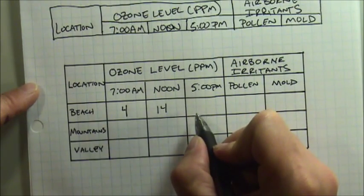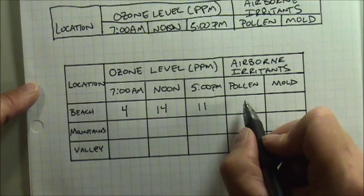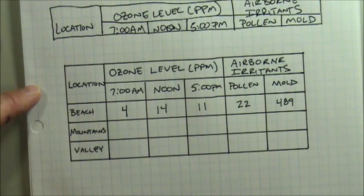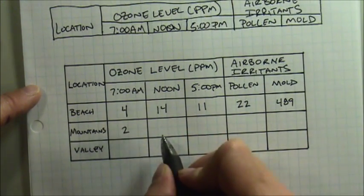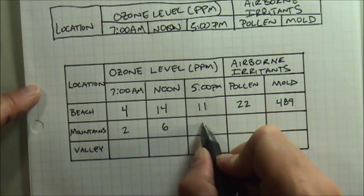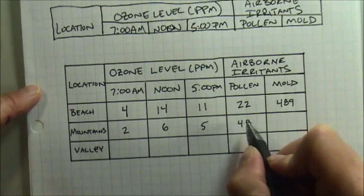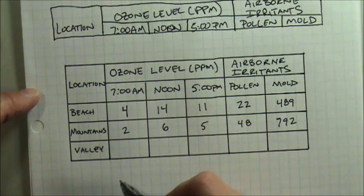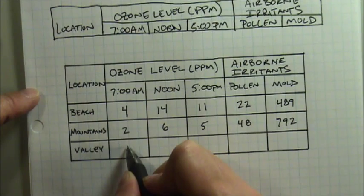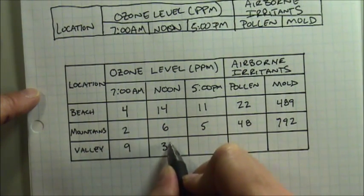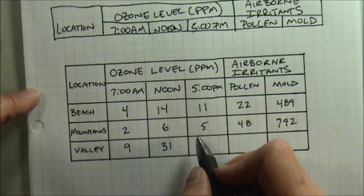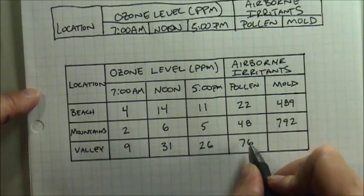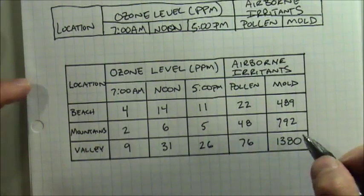And for pollen, that was 22. And for mold, 489. At the mountain location, it was 2 parts per million, then 6 and 5. The pollen count was a little higher, 48, and 792 for the mold count. Lastly is the valley. Valley has the highest recordings for all of these. That's 9 parts per million, 31, and lastly, 26. The pollen count was 76. And the mold count was 1380.